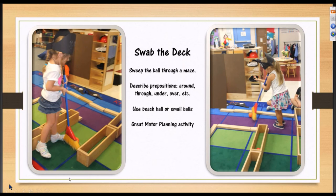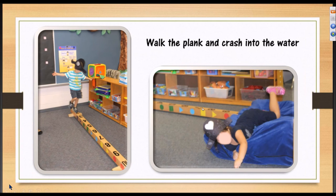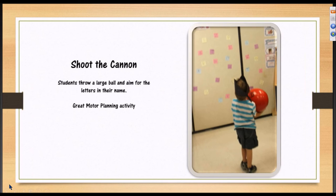My higher level kids can use their imagination and be a little more creative and develop that. We have swab the deck, which is motor planning where they sweep a ball through a maze. We use prepositions like through, under, over. Each of the stations around the room has directions in LessonPix visuals. We walk the plank and crash into the crash pad. We shoot the cannon, which means throw the ball at some stickies on the wall.